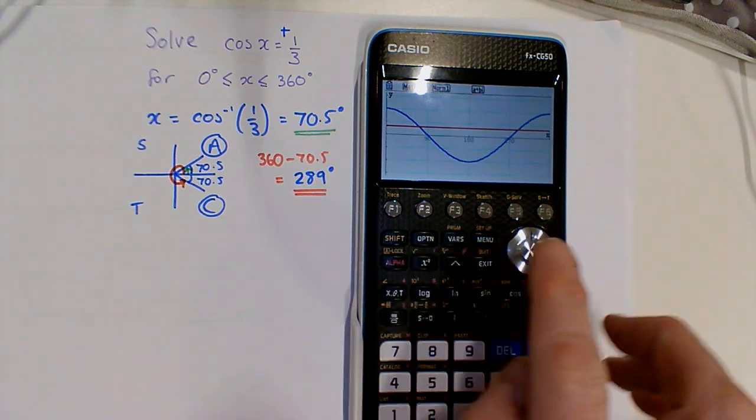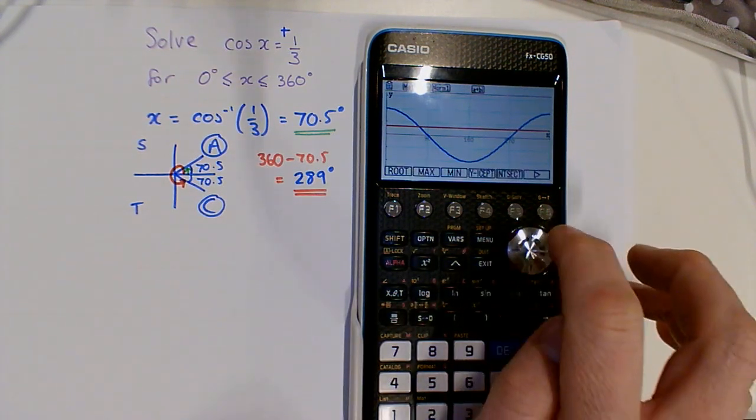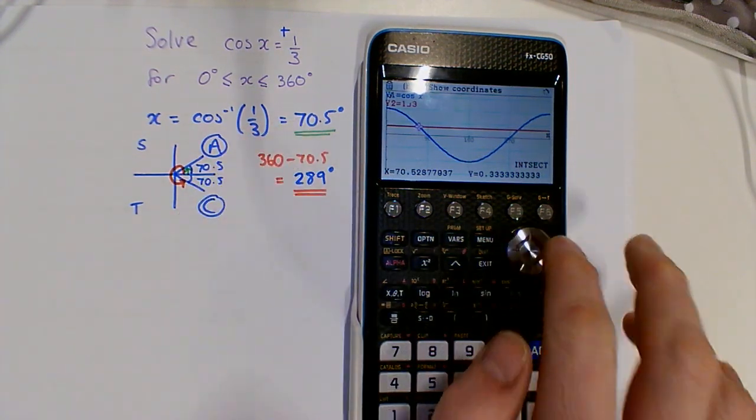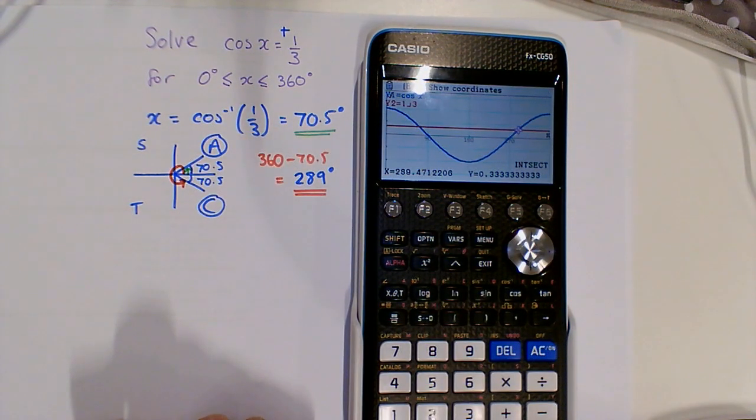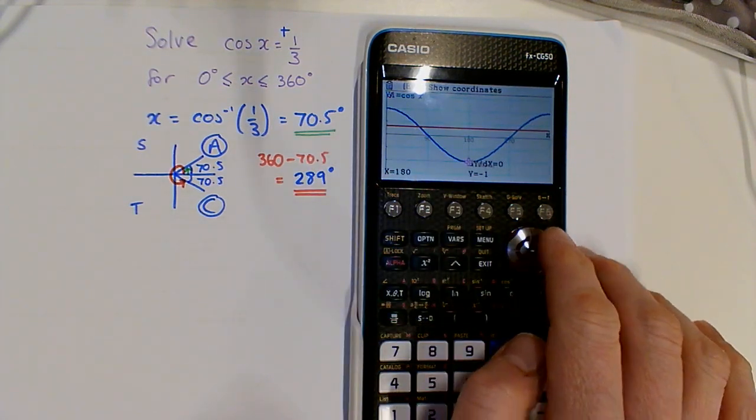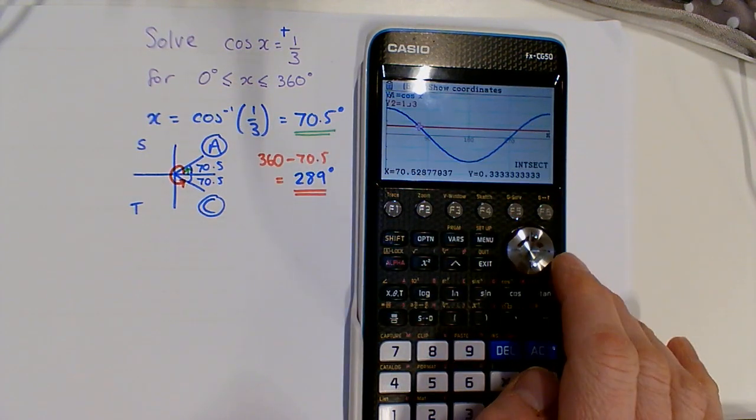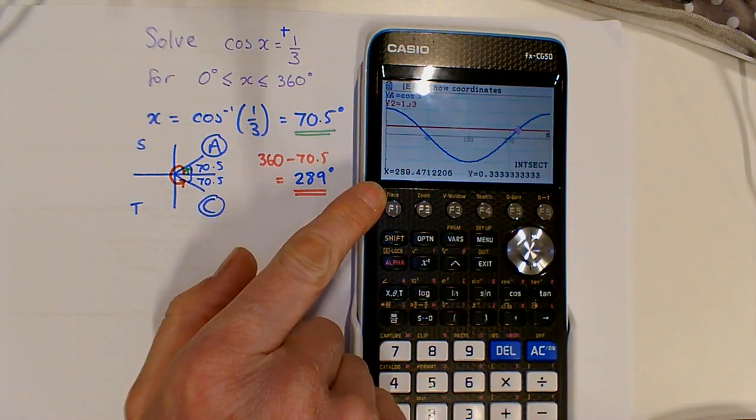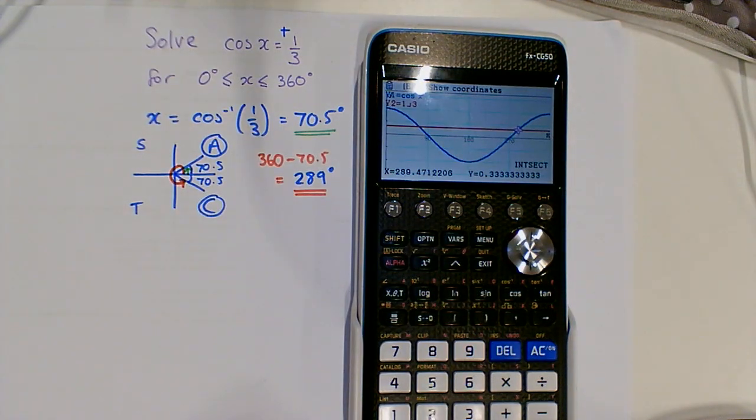That's better. If I find the points of intersection using g solve, intersect, I get 70.5° and then... oops, it was 289°. Let's try that again. There we go, 289° as well. Thank you.